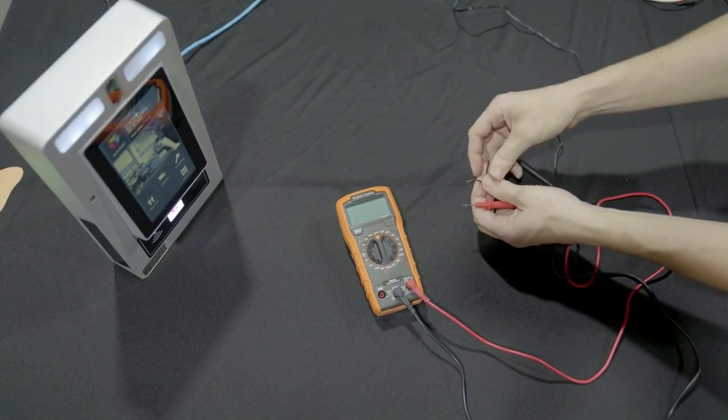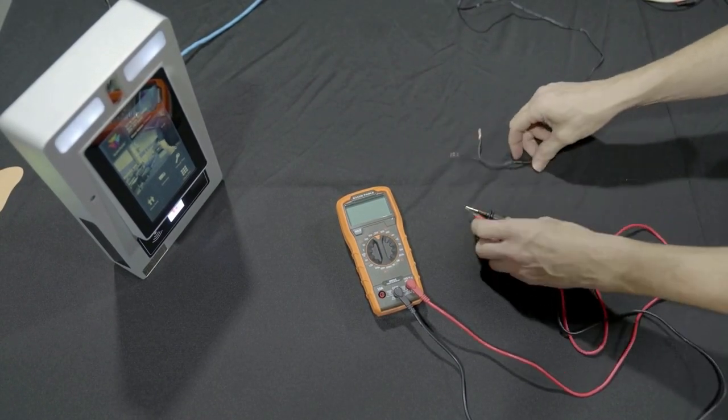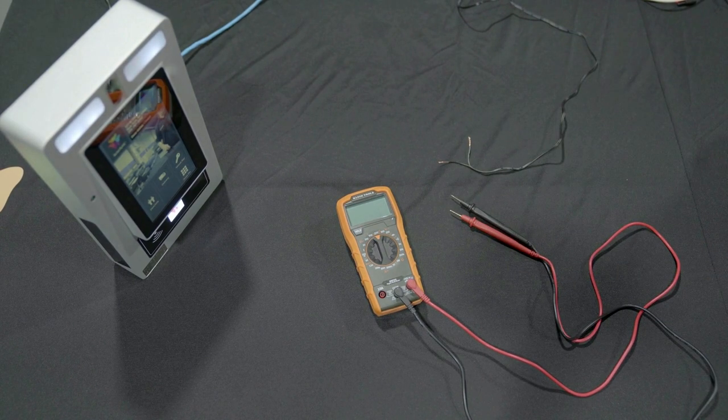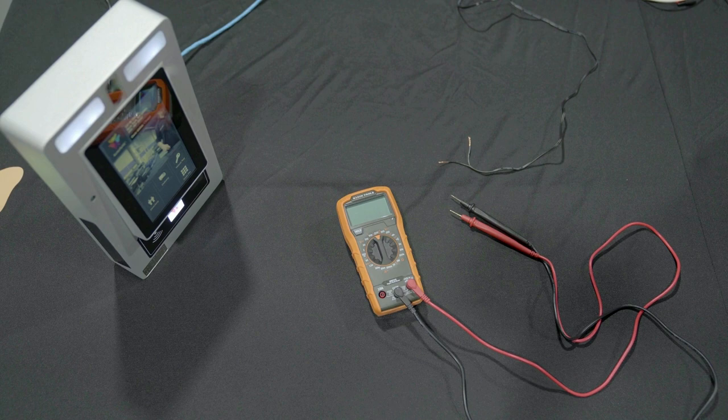Next we will check the polarity of each adapter to ensure we connected the correct cables to the circuits. We begin with the adapter we plan to use with the RB5. Make sure it is not plugged in. Separate the two conductor wires.